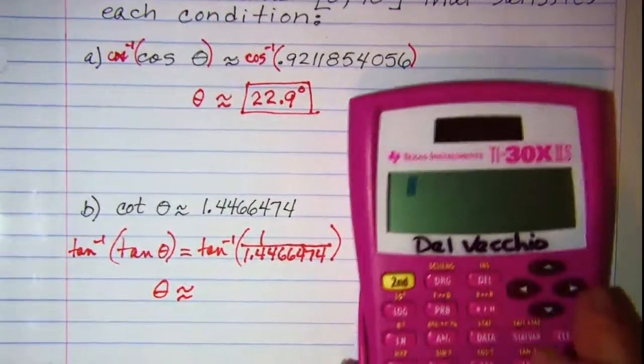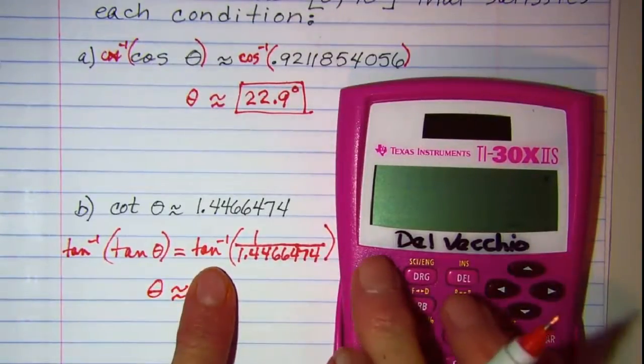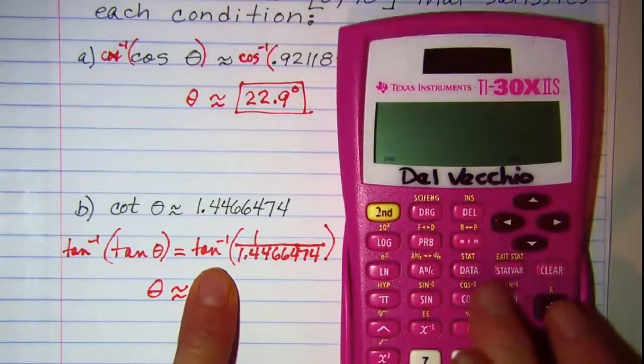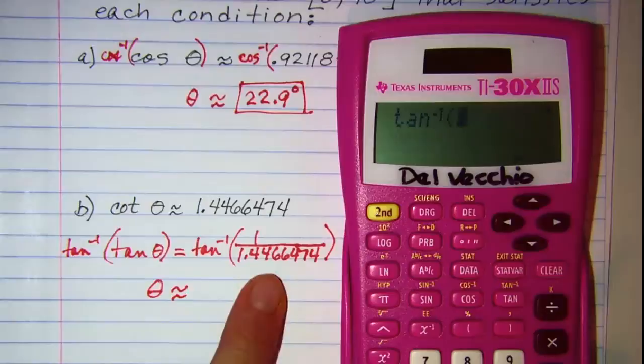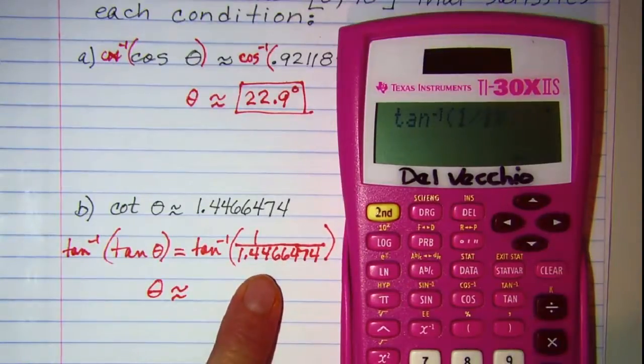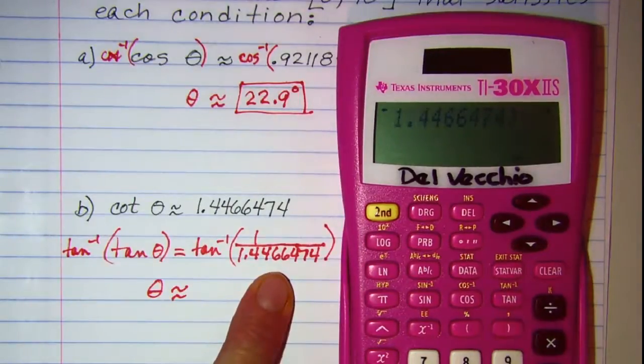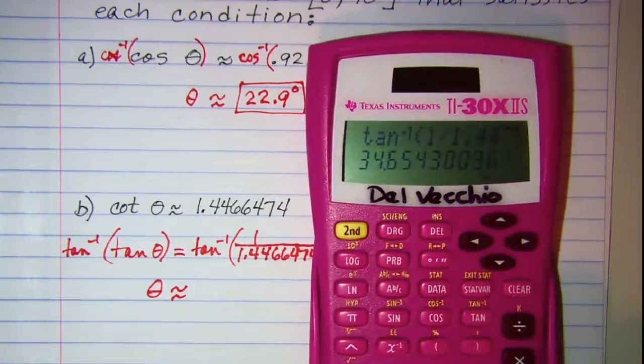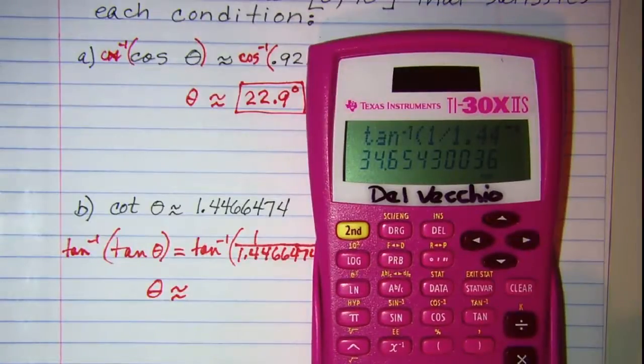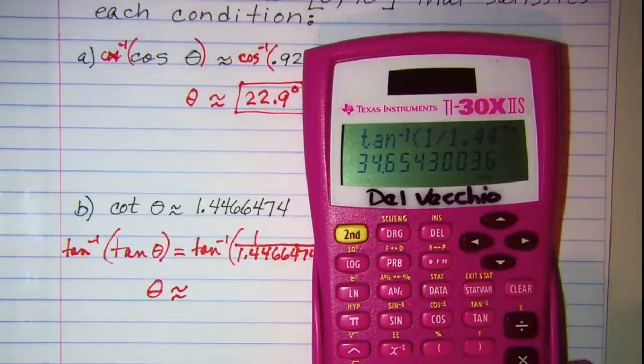and then I'm ready to get my calculator. So I want inverse tangent, so 2nd tangent and then 1 divided by 1.4466474. Close the argument and hit enter. So it looks like our angle is 34.7 or 34.65. Let's write that.